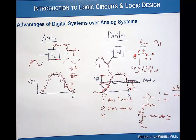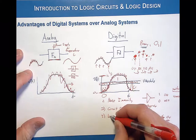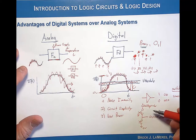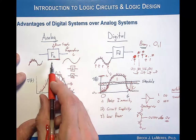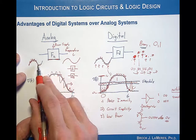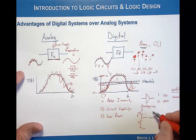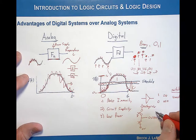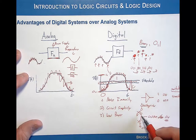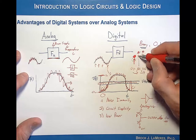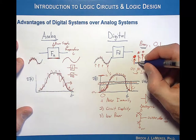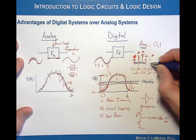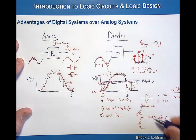The third big advantage of a digital system is its low power nature. Opening and closing switches takes much less power than continuously amplifying or attenuating a signal as in an analog system. Furthermore, the switches are only opened and closed at discrete intervals, meaning power is not consumed in between those intervals — so the system is not consuming power the majority of the time it's in operation.